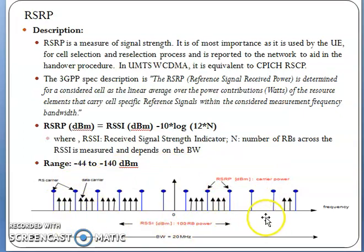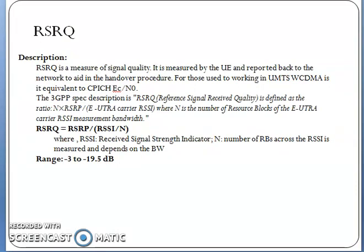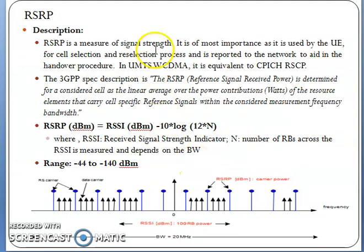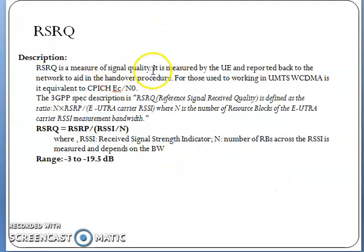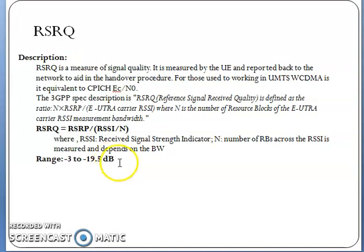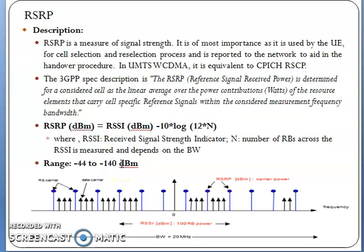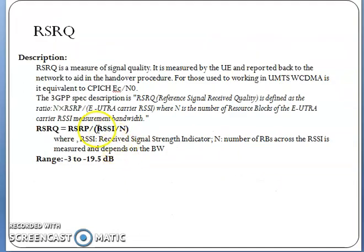Next is RSRQ — Reference Signal Received Quality. RSRP measures signal strength, while RSRQ measures signal quality. The formula is: RSRQ = (N × RSRP) / RSSI, where N is the number of resource blocks, RSRP is the reference signal received power, and RSSI is the Reference Signal Strength Indicator. The range varies from −3 to −19.5 dB. Note that RSRP unit is dBm and RSRQ unit is dB.